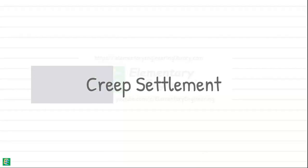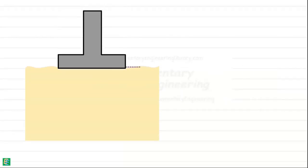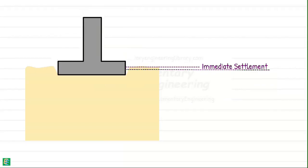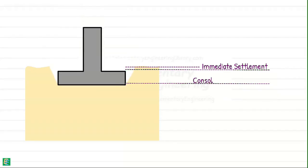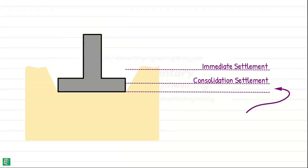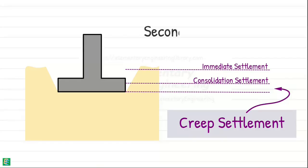Then there is another component: creep settlement. Some soils continue to reduce their volume for a long time even after the excess pore water has been dissipated and consolidation settlement is complete. This additional reduction in the volume is called creep settlement and is sometimes also called secondary consolidation.